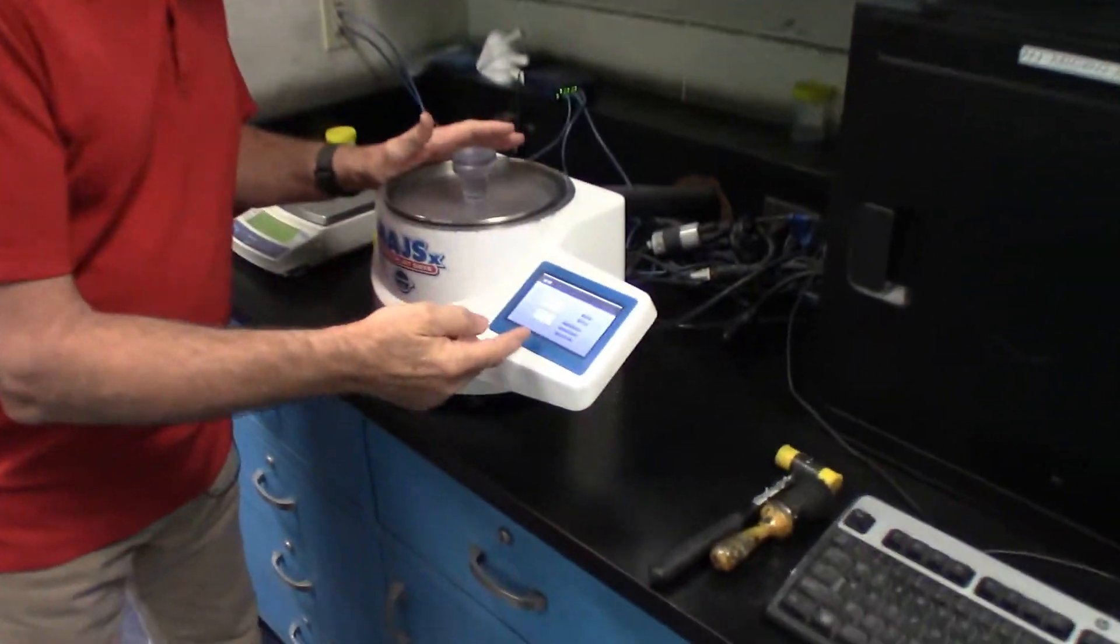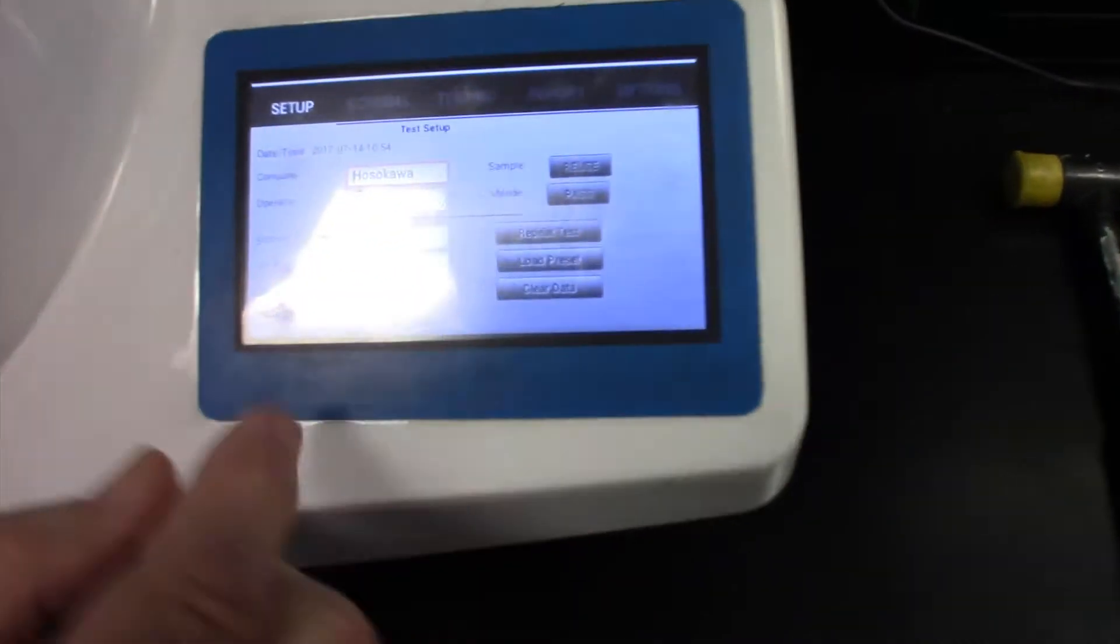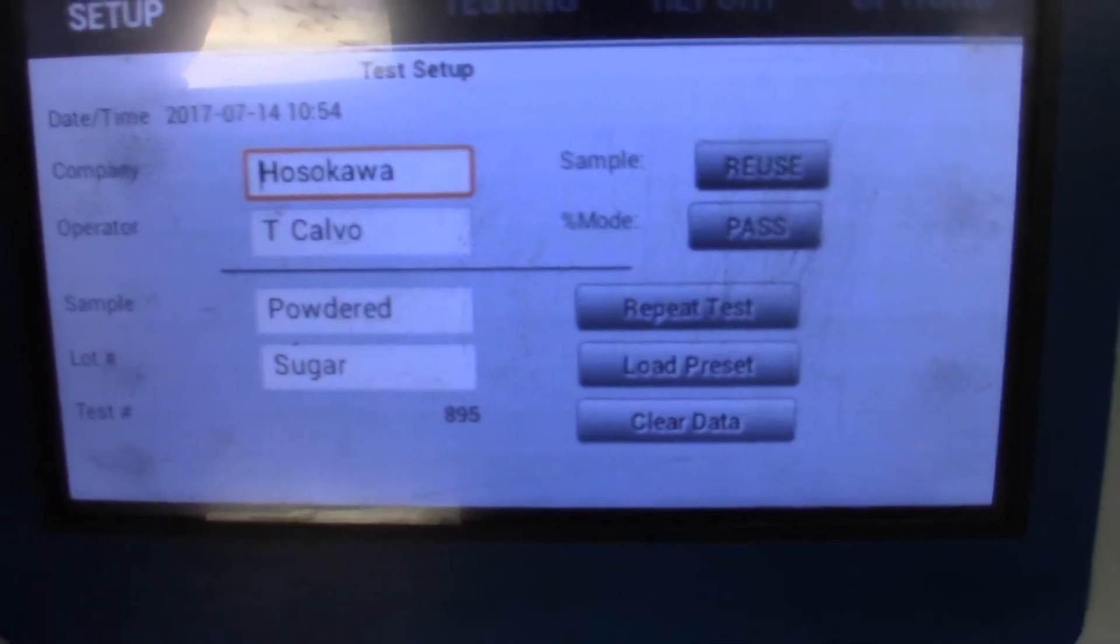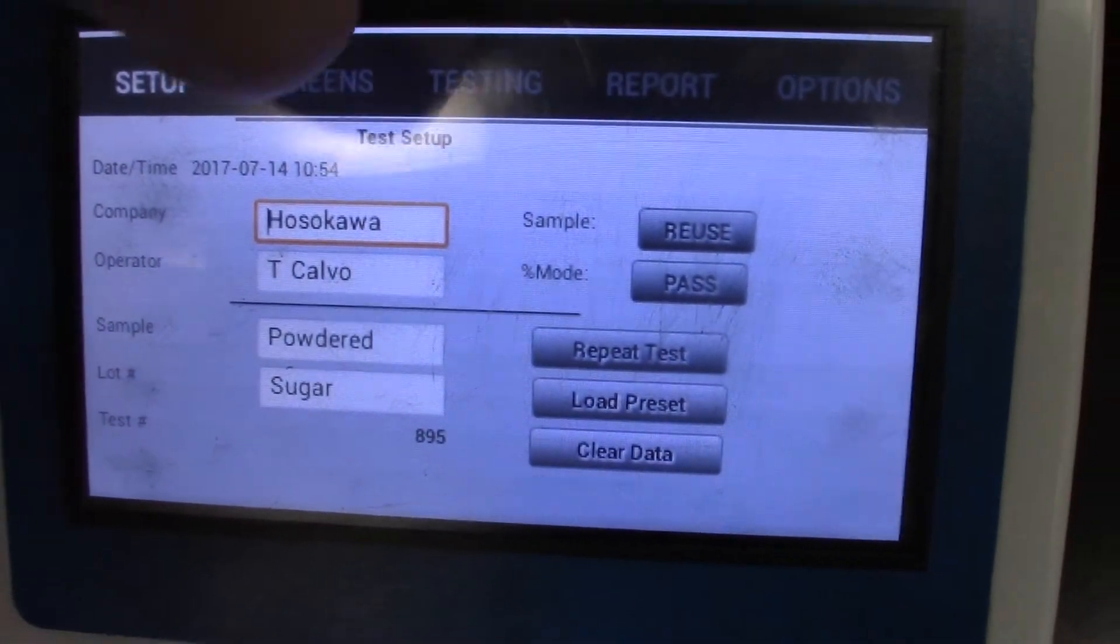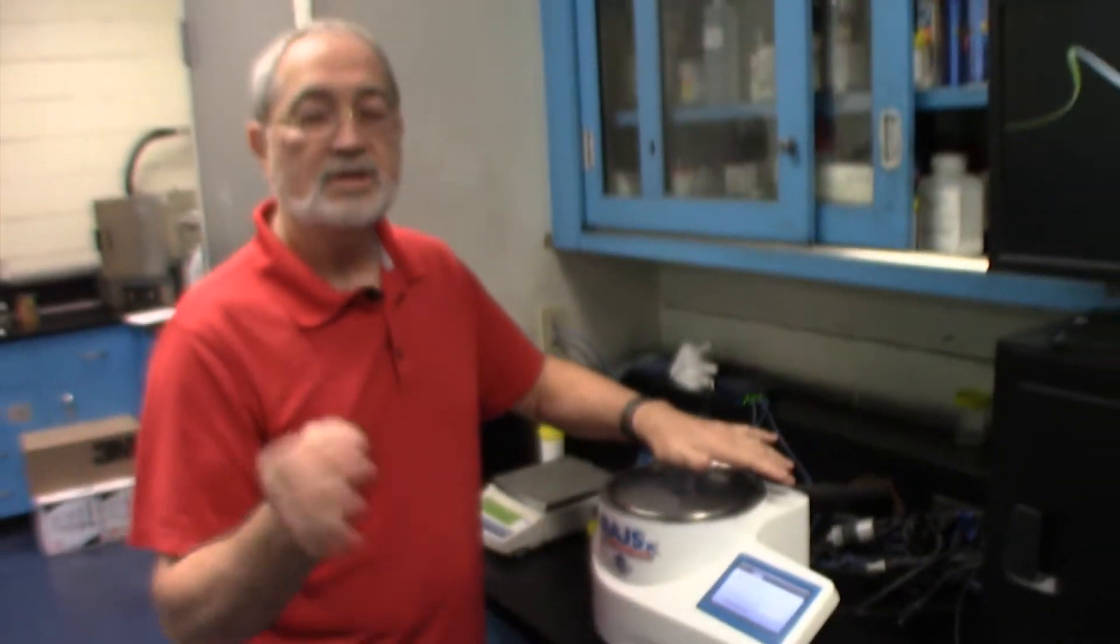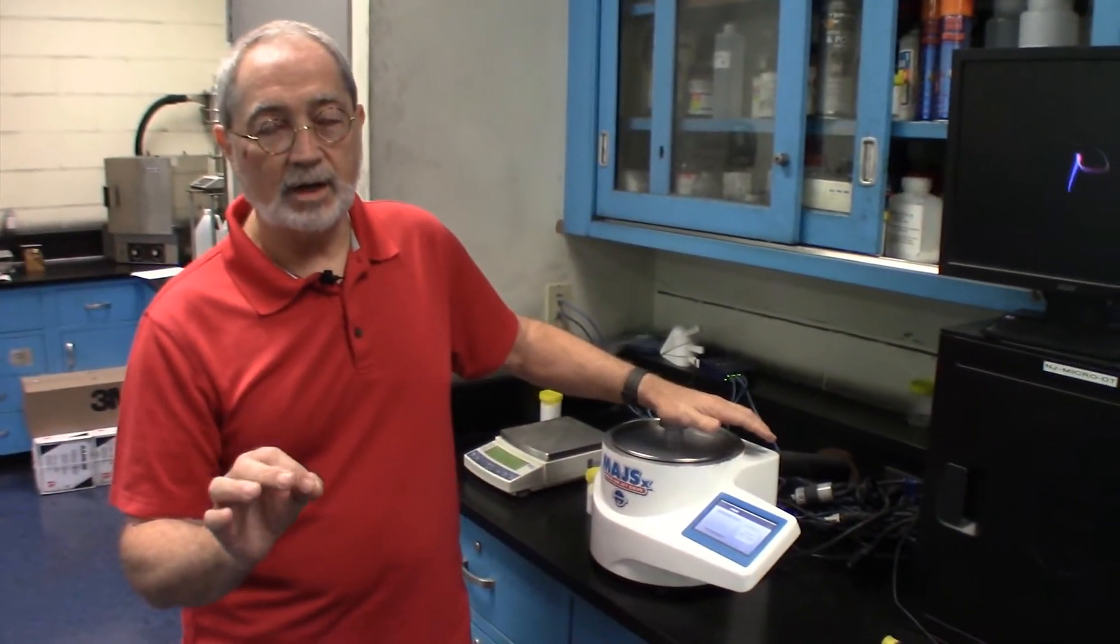I've taken the liberty of pre-setting up the Airjet sieve to show the sample, or at least the setup page. We typically measure against the 75 micron, otherwise known as a 200 mesh screen.